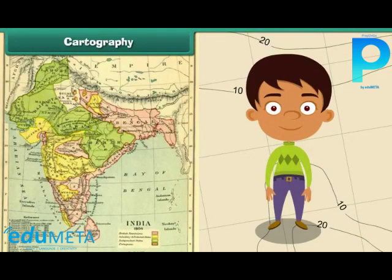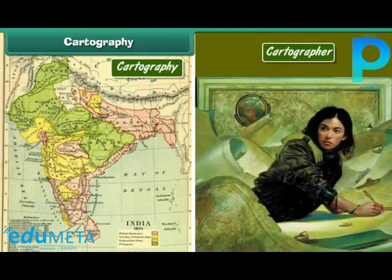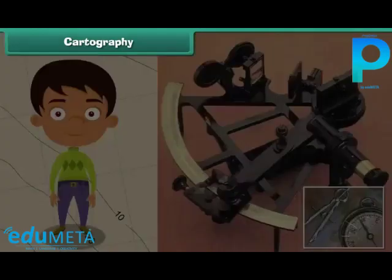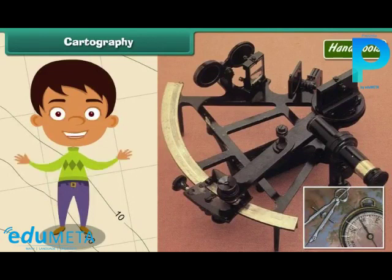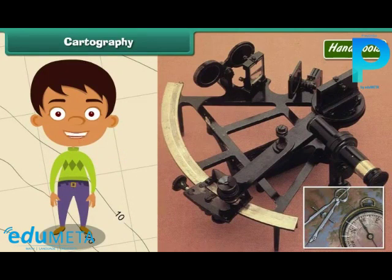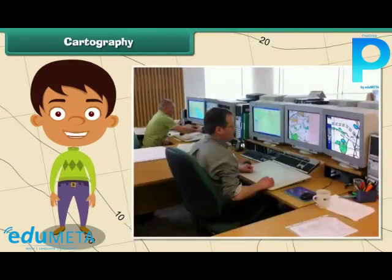Cartography is the science of drawing maps. The person who draws maps is known as a cartographer. In the olden days, maps were drawn using hand tools. Hand cartography was a time-consuming and difficult process, and maps drawn using hand tools were also inaccurate. But nowadays, maps are drawn with the help of computer software. Hence, they are more accurate.